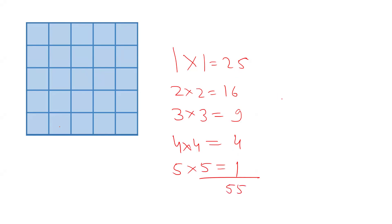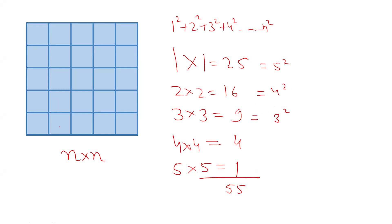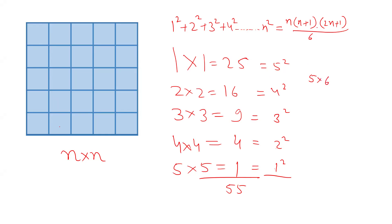Now I was talking about the formula for this. The formula is: if there is an n by n grid, then the total number of squares will be 1² + 2² + 3² + 4² up to n² — the sum of squares of n natural numbers. Here you can see that 1 by 1 has 25 = 5², 2 by 2 has 16 = 4², 3 by 3 has 9 = 3², 4 by 4 has 4 = 2², and 5 by 5 has 1 = 1². So total = 1² + 2² + 3² + 4² + 5². There is also a closed formula: n(n+1)(2n+1)/6. Putting n=5: 5 × 6 × 11 / 6 = 55. Total number of squares are 55.